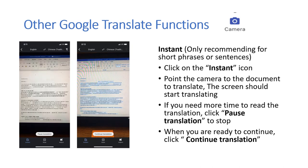Instant — only recommended for short phrases or sentences. Click on the instant icon and point the camera to the document to translate. The screen should start translating. If you need more time to read the translation, click Pause Translations to stop. When you are ready to continue, click Continue Translation.